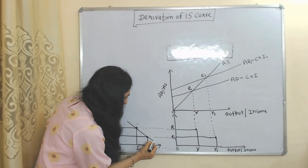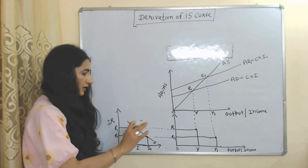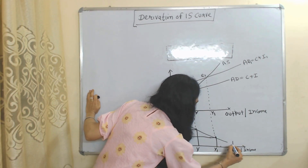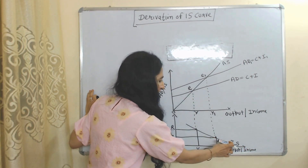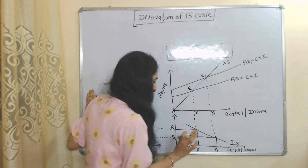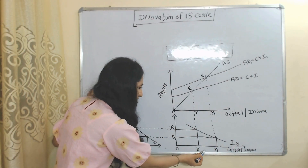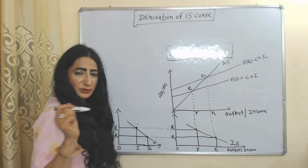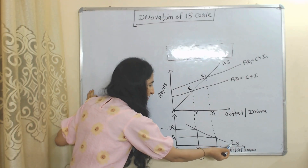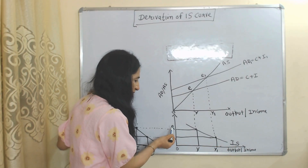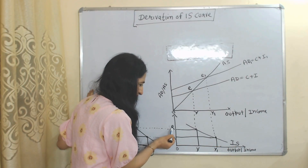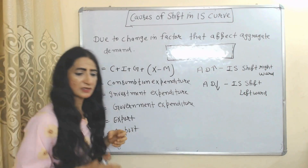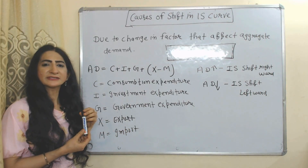When we join these two equilibrium points, we receive our IS curve. This is the IS curve which represents the inverse relationship between output and interest rate — as interest rate falls, output rises, and as interest rate rises, output falls.